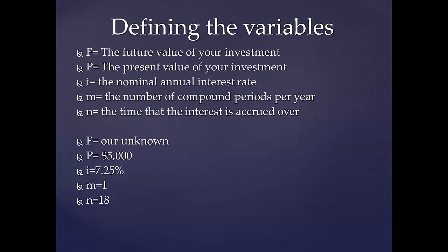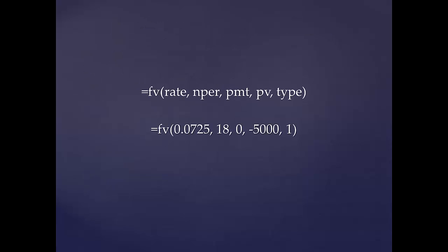Now that we've identified these variables, let's discuss the variables used in Excel. In this example, we're solving for a future value given the present value. In Excel, this notation is FV(rate, nper, PMT, PV, type).